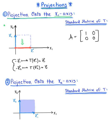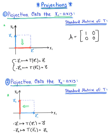In case 2, we take the unit square and project it onto the x sub 2 axis. In this case, e sub 1 is mapped to the origin — the zero vector — and e sub 2 remains unchanged, mapping to itself. So the standard matrix of T is the 2 by 2 matrix whose first column vector is 0, 0 and whose second column vector is 0, 1.